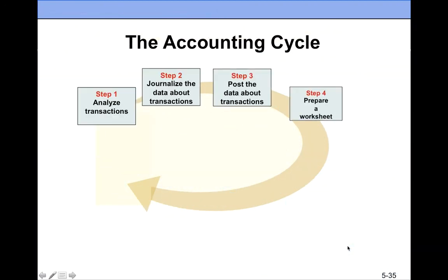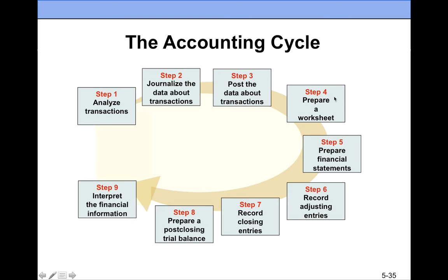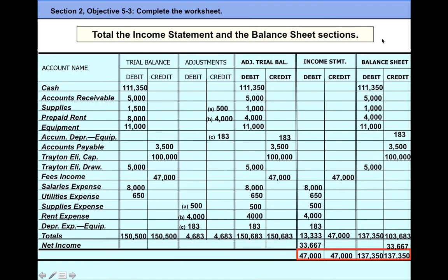This completes step four of our accounting cycle. Now I'm ready to take all the data I need — total expenses, revenues, and net income are already known. I'm ready to prepare financial statements. You can prepare financial statements without the worksheet, but the worksheet nicely sets everything up, and you take data from it to prepare them.